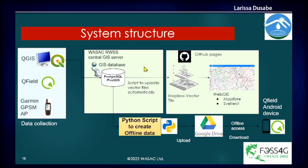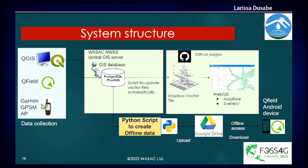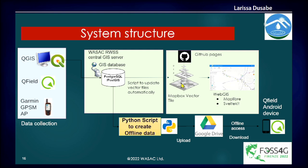This is our system structure for data collection. We use GPS, QField, and QGIS. We have a GIS database, and there is a script to update vector tiles automatically to Mapbox Vector Tiles. Since Mapbox is no longer open source, we transferred to MapLibre. There is also a way to get offline access to the database.